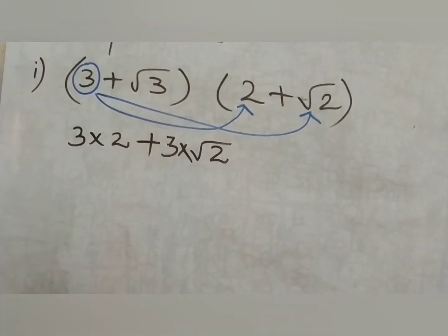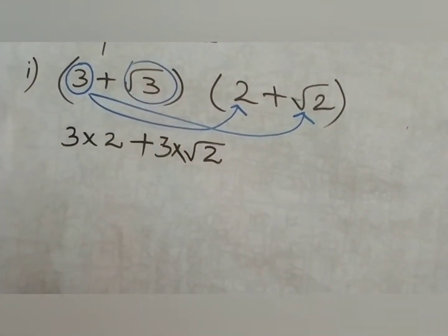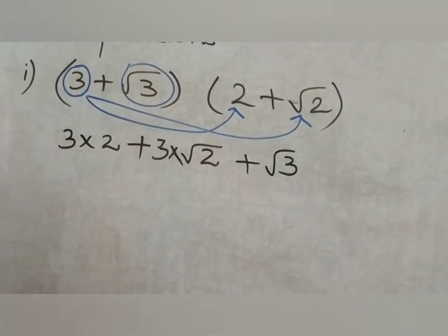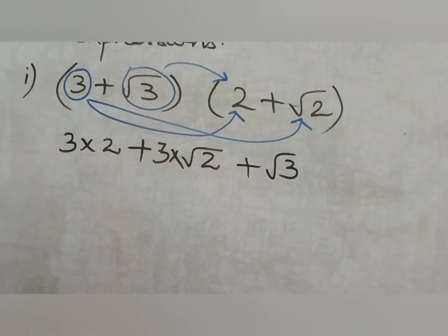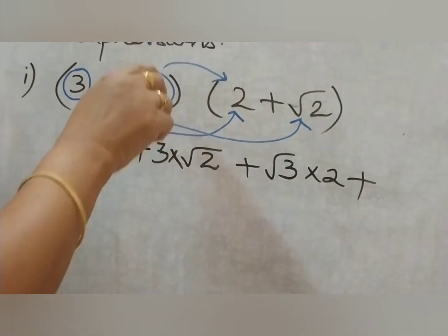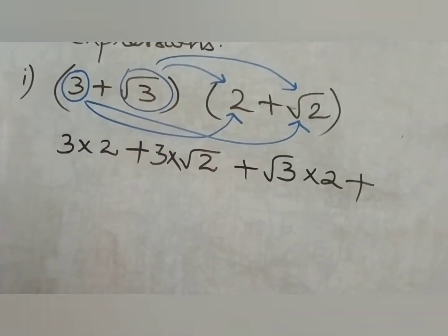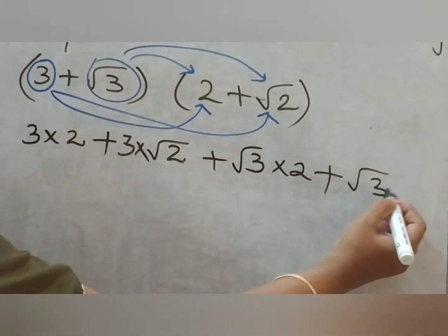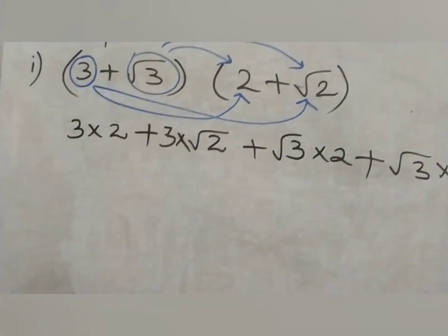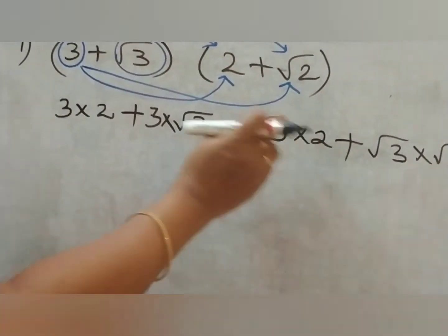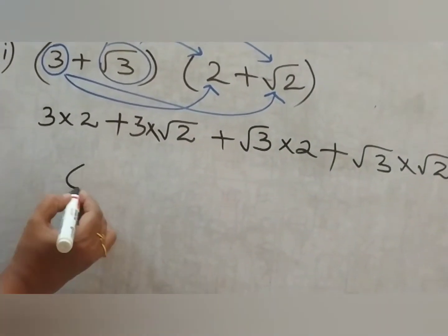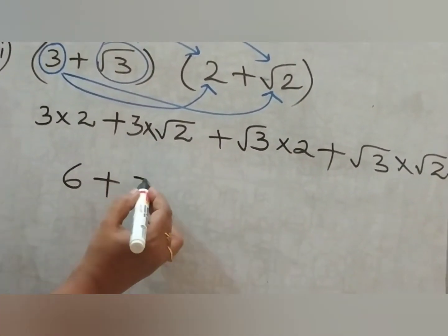So we have 3 into 2 plus 3 into √2. We have taken the first term and multiplied by both terms. Now the second term is √3. Plus √3 — here also we do the same: multiply with 2 to get plus 2√3, and then multiply √3 with √2 to get √3 into √2. Why is it plus everywhere? Because both brackets have plus. So: 3 twos are 6, plus 3 into √2 is 3√2.